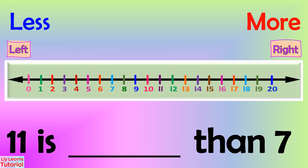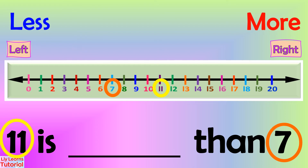In the given question, 11 is blank than 7. Let's circle 11 and 7 on the number line. 11 is at the right side, so it is more. Then we count back until 7 to see how many more 11 is compared to 7.